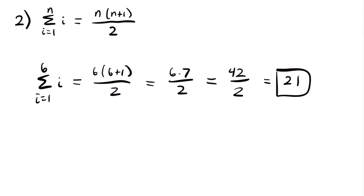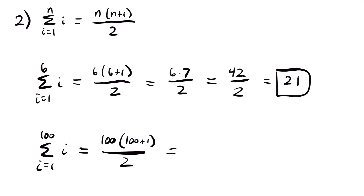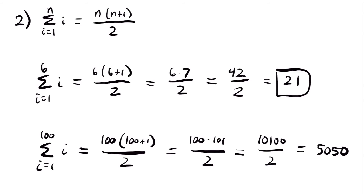This formula saves a lot of time when adding many numbers. If we wanted to add the numbers from i equals 1 to 100, that would take a long time individually. Using the formula: 100 times 100 plus 1 divided by 2, which is 100 times 101 divided by 2, which is 10,100 divided by 2, which equals 5050. You can see how useful this summation formula is — we found the sum from 1 to 100 very quickly.